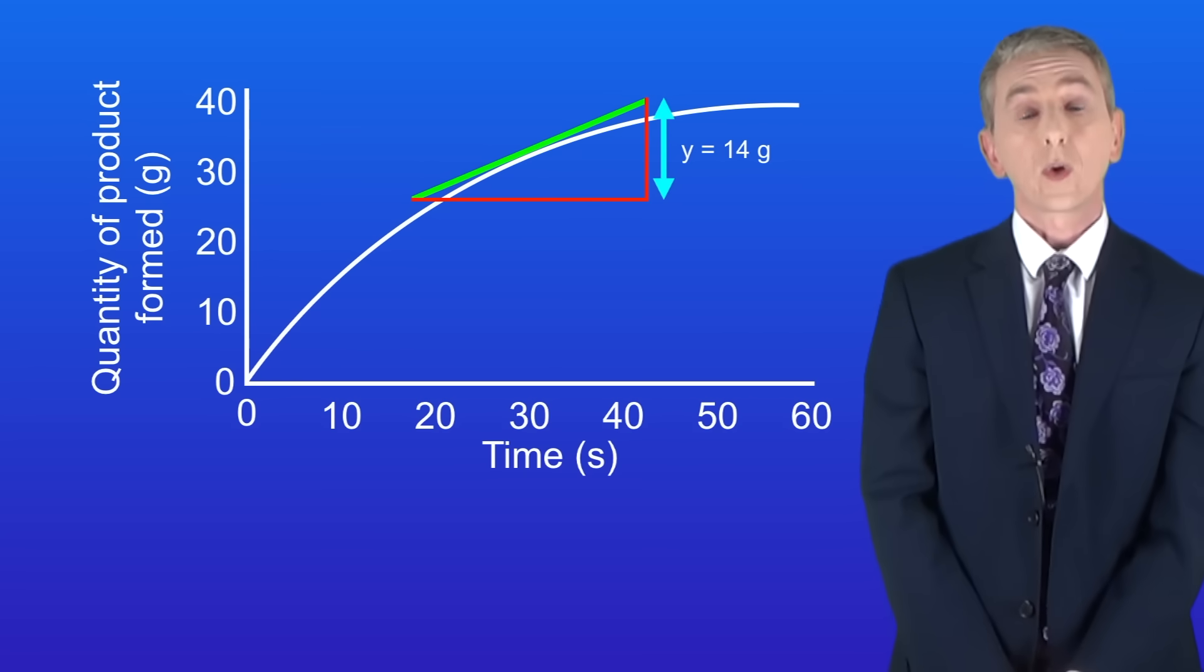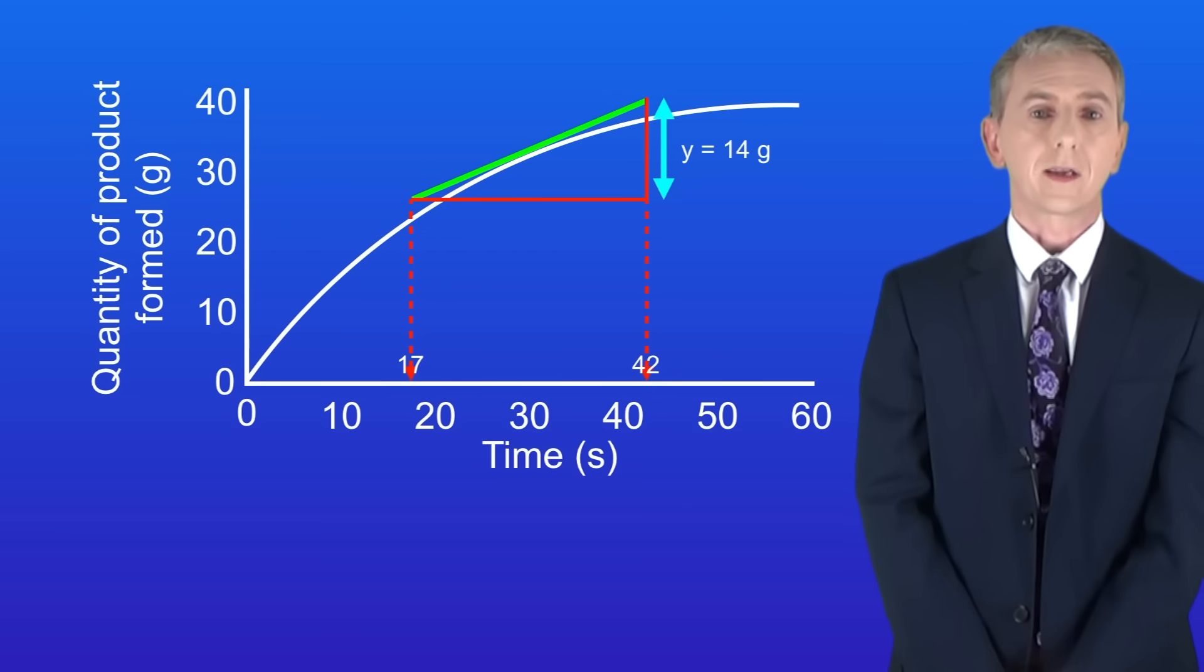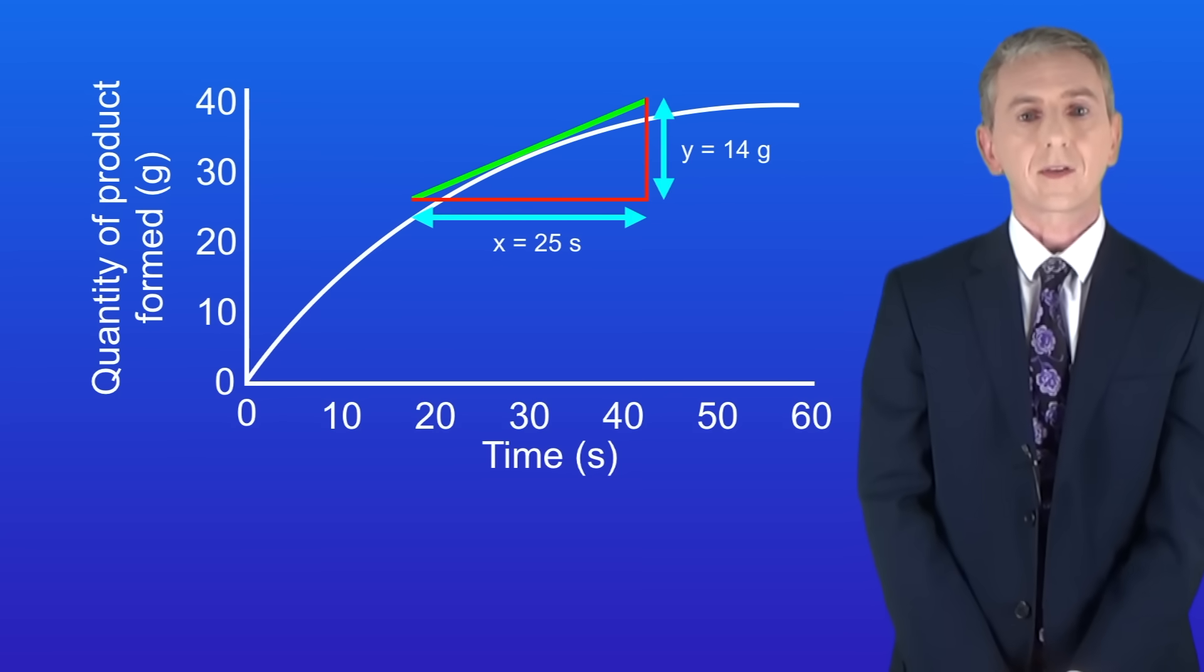Reading from the x axis we can see that the horizontal line stretches from 17 seconds on the left to 42 seconds on the right. This gives us a value of 25 seconds for the x side of the triangle.